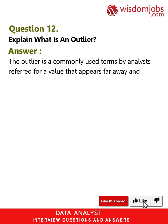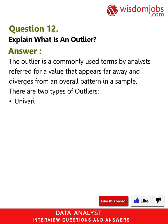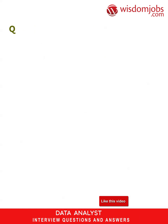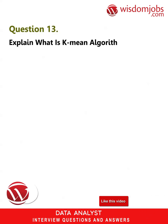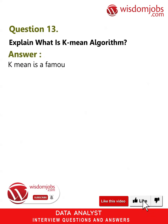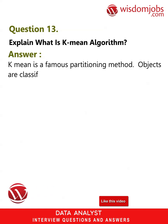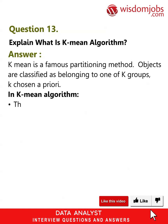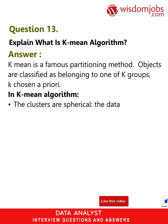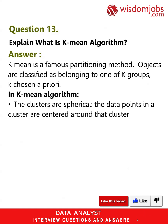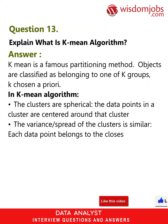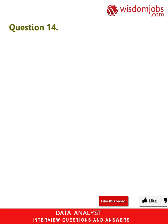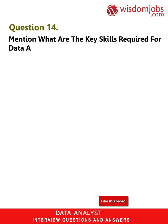Question twelve: What is an outlier? Answer: An outlier is a commonly used term by analysts referring to a value that appears far away and diverges from an overall pattern in a sample. There are two types of outliers: univariate and multivariate. Question thirteen: What is the k-means algorithm? Answer: K-means is a famous partitioning method where objects are classified as belonging to one of k groups, with k chosen a priori. In k-means, clusters are spherical, data points are centered around their cluster, variance across clusters is similar, and each data point belongs to the closest cluster.